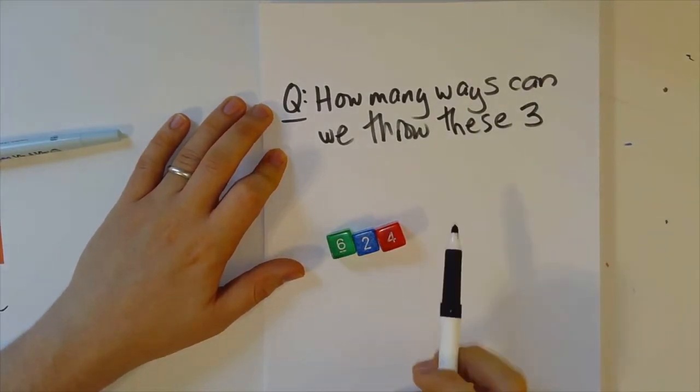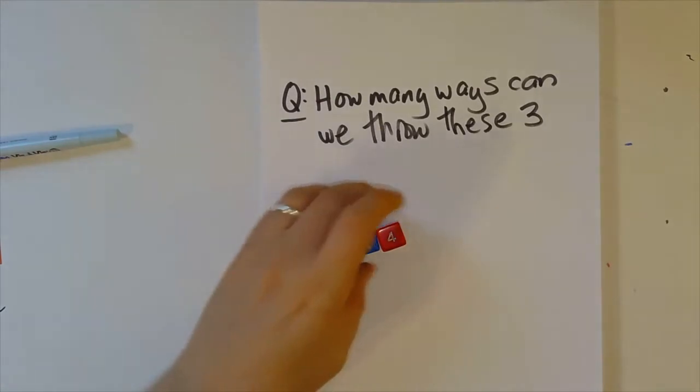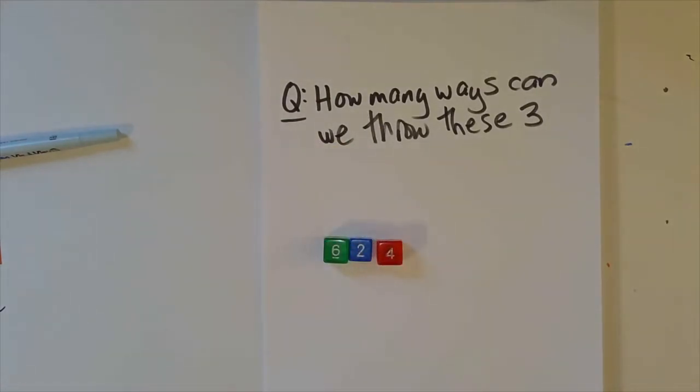And by the way, I picked different colored dice specifically so that these are definitely distinct. So that the green die being a six and the red die being a four is different from the green die being a four and the red die being a six.